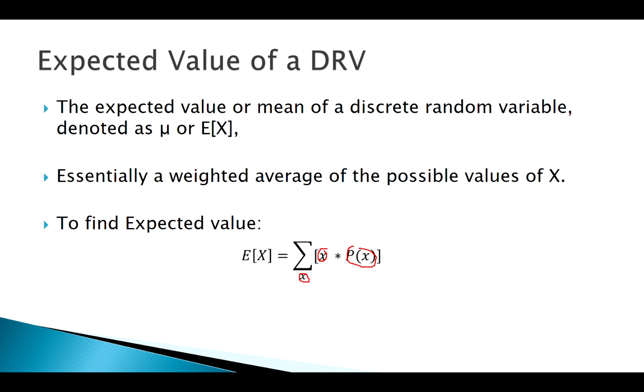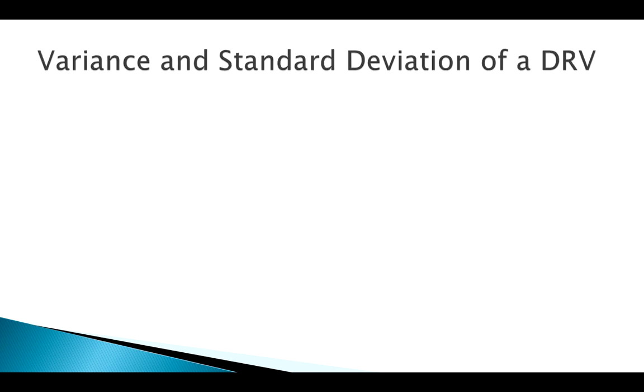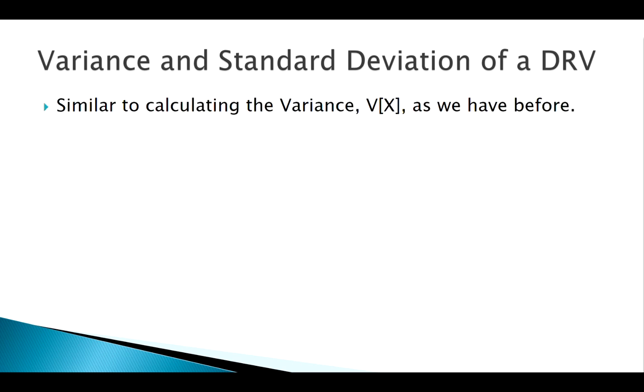Finding the expected value of a discrete random variable is really not too bad—just take a weighted average. The next step after that is finding our variance and, by extension, the standard deviation. The first step to finding a variance or standard deviation is always going to be to find our mean. It's essentially a supplement to that mean, so that's going to be the first step: find that expected value.